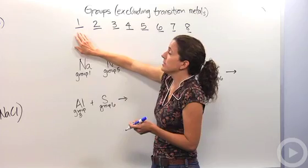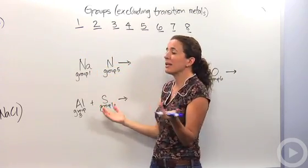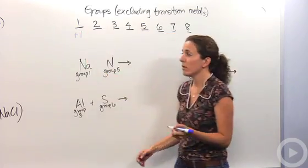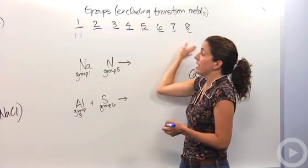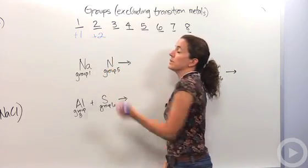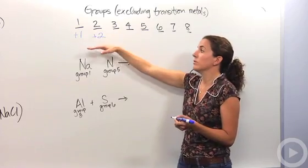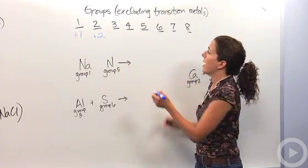Group one could either gain seven more electrons or lose one electron. So it's probably going to lose that one electron, making it a plus one charge. Group two, they could either gain six or lose two. And as you guessed it, they're going to lose those two, making it a positive two charge. Group three, they could either lose three or gain five. They're going to lose three.